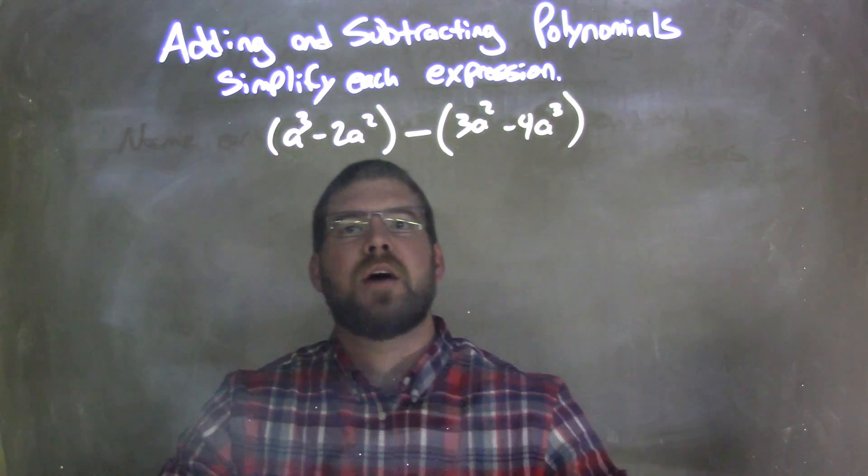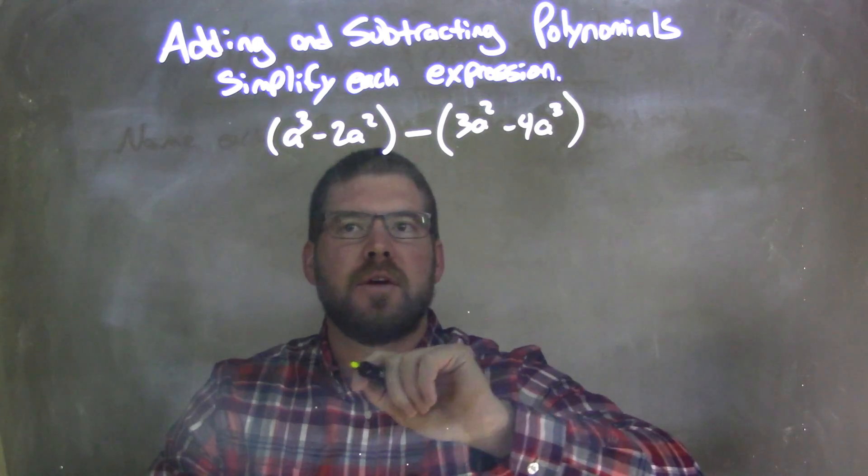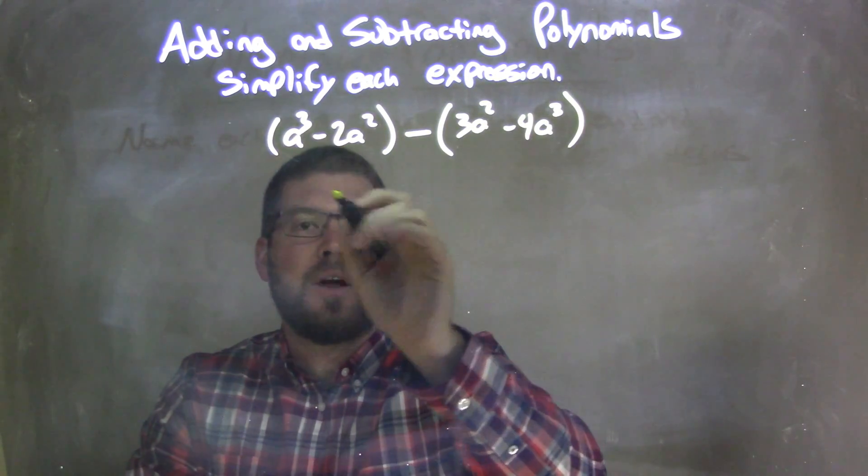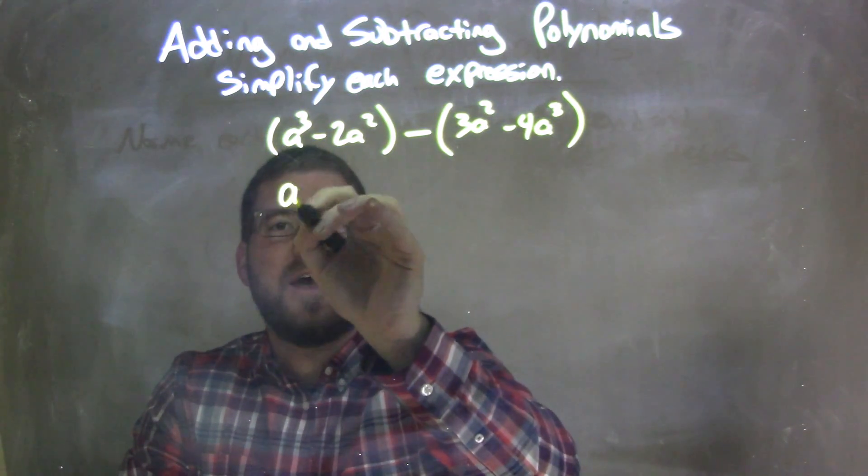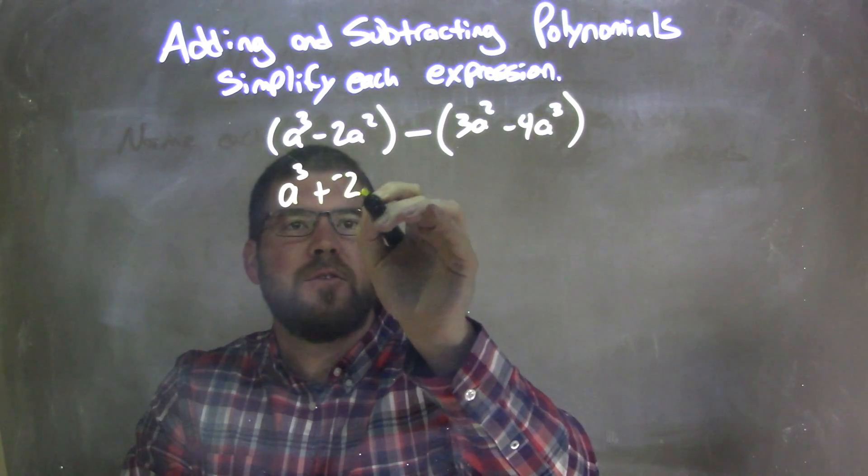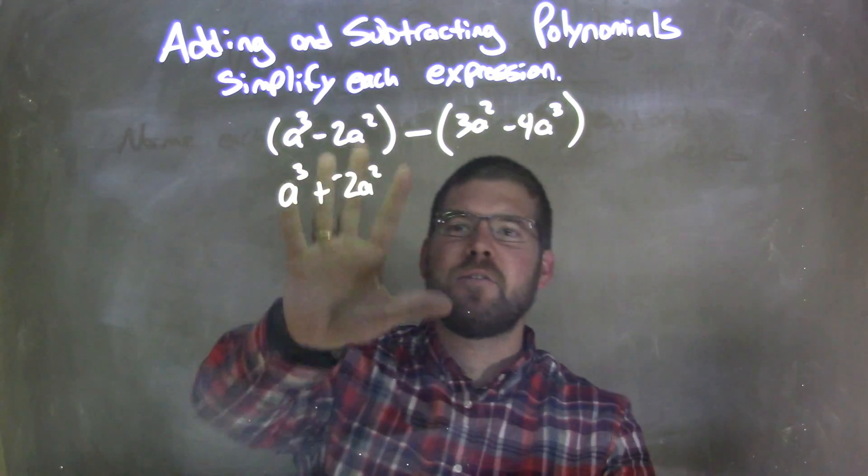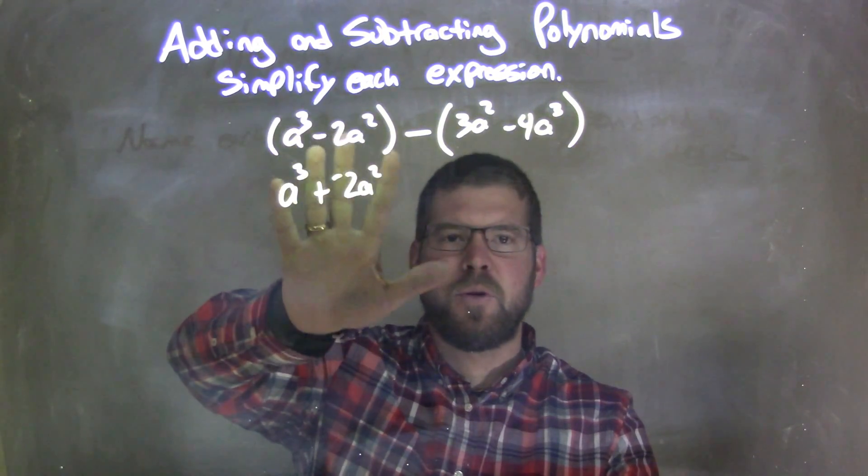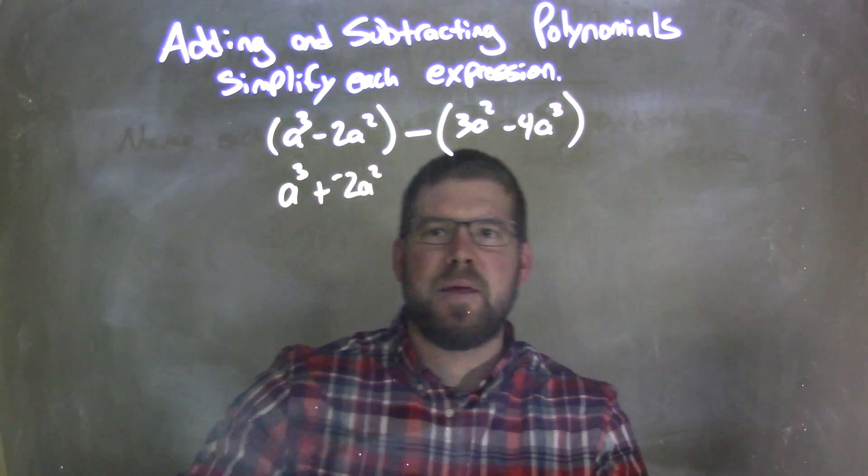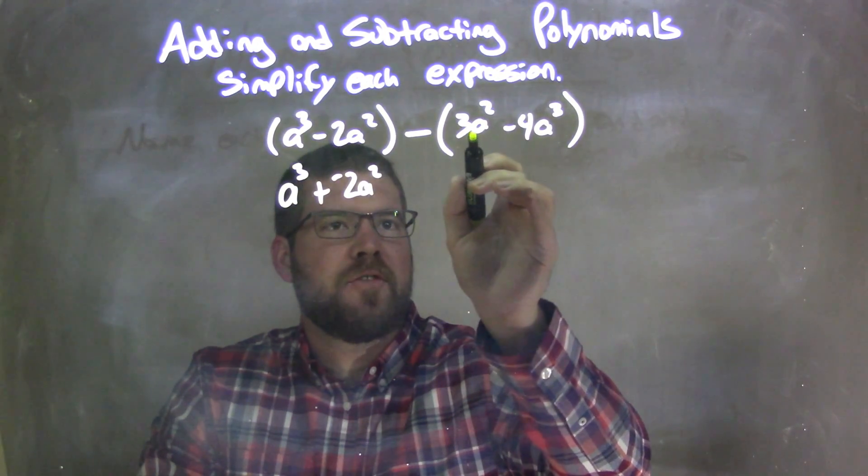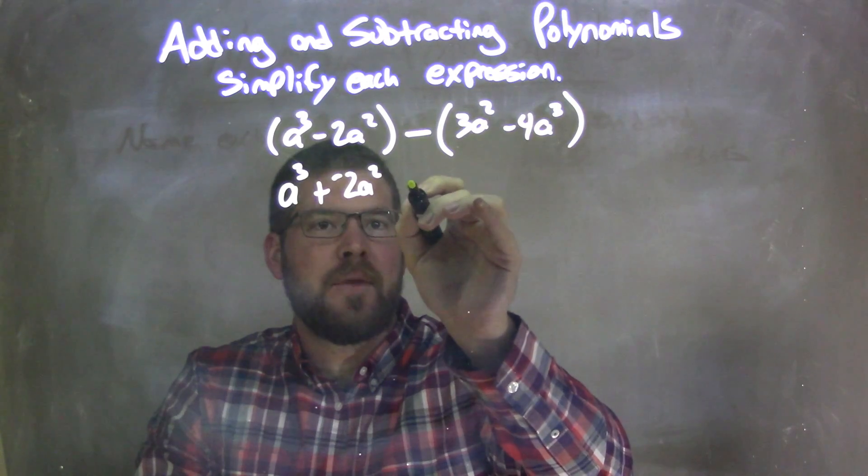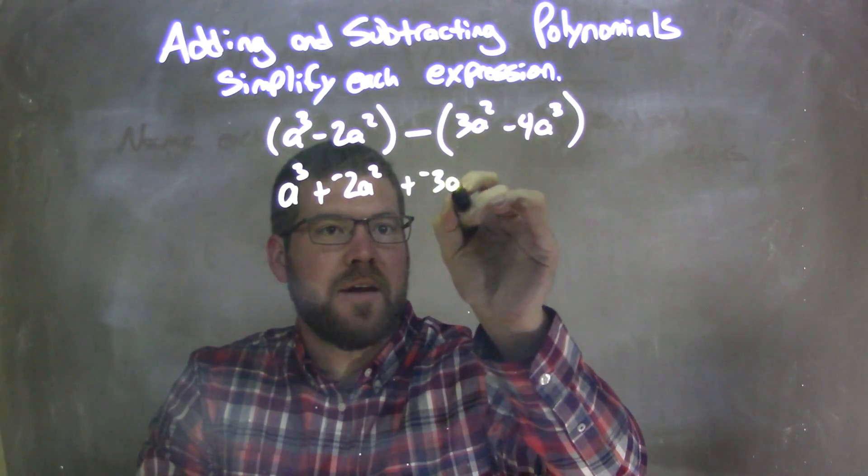First thing I need to do is I'm going to distribute that minus sign across here. So I'm going to rewrite all these with plus a negative because I like that. So I'm going to have a to the third plus a negative 2a squared. And notice I got rid of my parentheses. I couldn't simplify them anymore. This minus sign gets distributed to the 3a squared. So we have now a plus a negative 3a squared.